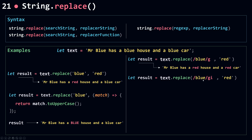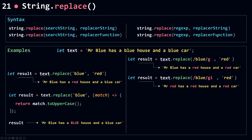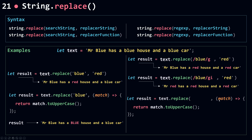In the next example I add the case-insensitive flag to the regular expression. This will match the capitalized 'Blue' as well as the lowercase occurrences, replacing all three with 'red'. You can also pass in a function as the second parameter when using regular expressions. Using the same function as before — getting the match and uppercasing it — with the global and case-insensitive flags, all three matches will now be uppercased. The replacer function can also take in additional parameters; check the documentation for more advanced usage.